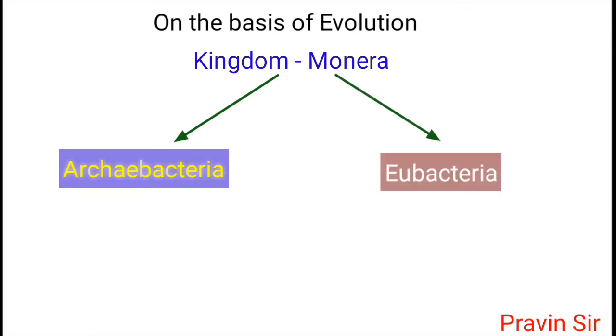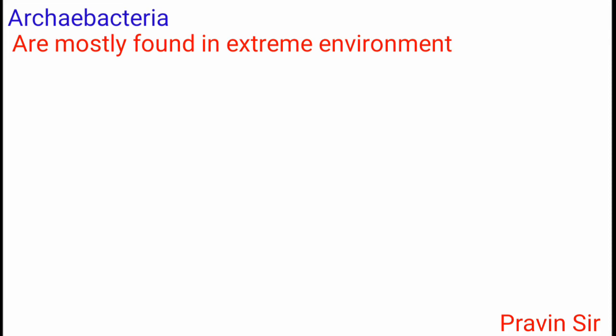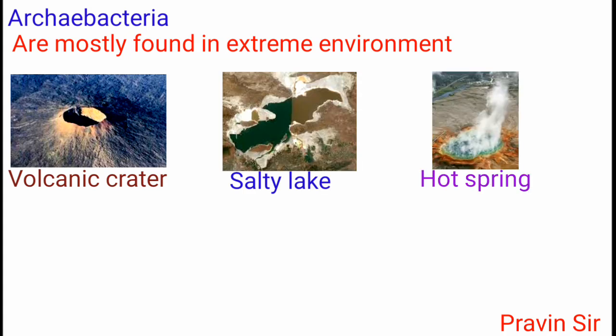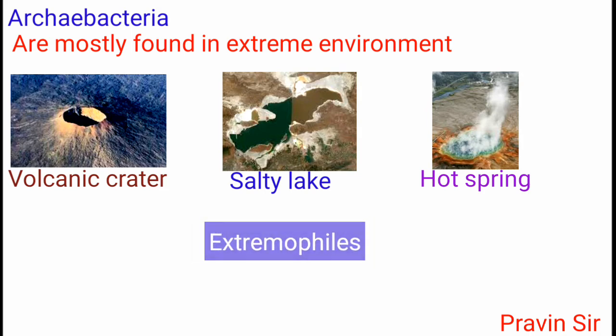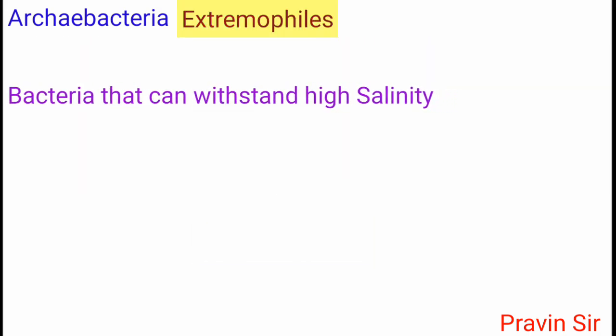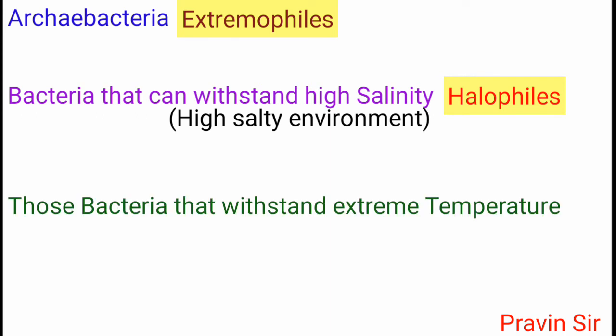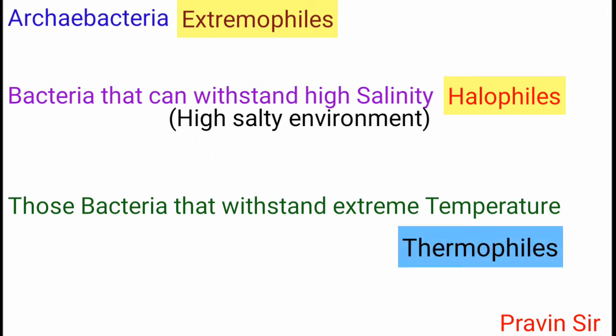Archaebacteria are mostly found in extreme environments, from volcanic craters to salty lakes and hot springs, and hence they are called extremophiles. Bacteria that can withstand high salinity — high salty environments — are called halophiles. Those that withstand extreme temperatures are known as thermophiles.